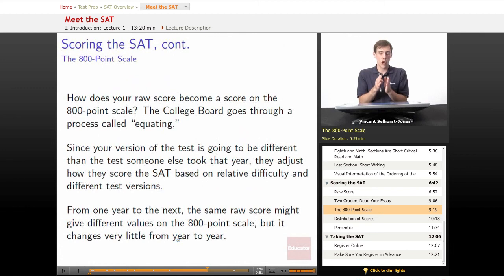From one year to the next, the same raw score might give different values on the 800-point scale, but we're talking very slight variations. If you wind up getting a 50 raw point score, it might be plus 10 or minus 10 from one year to the next, but for the most part, it's going to wind up being pretty much the same thing. So don't worry about how it changes from year to year. Mainly, you've got a sense of how it is based on your raw score. Then, they take your raw score, and they think in terms of this equating, and they're going to apply the scores to a bell curve.